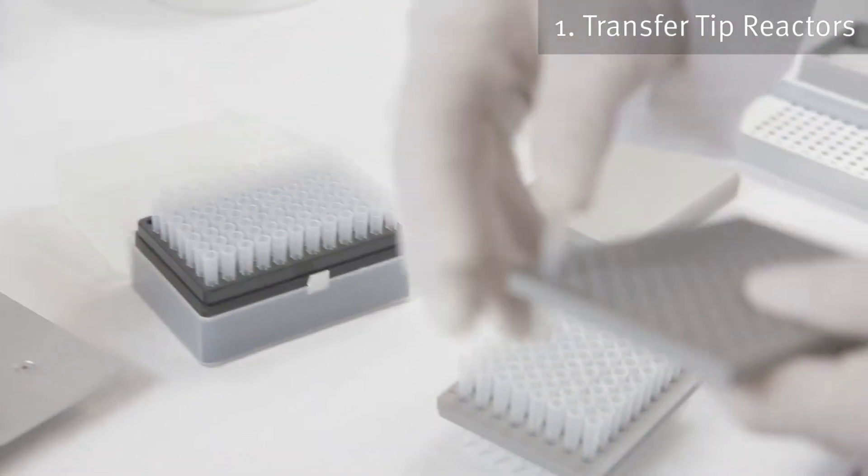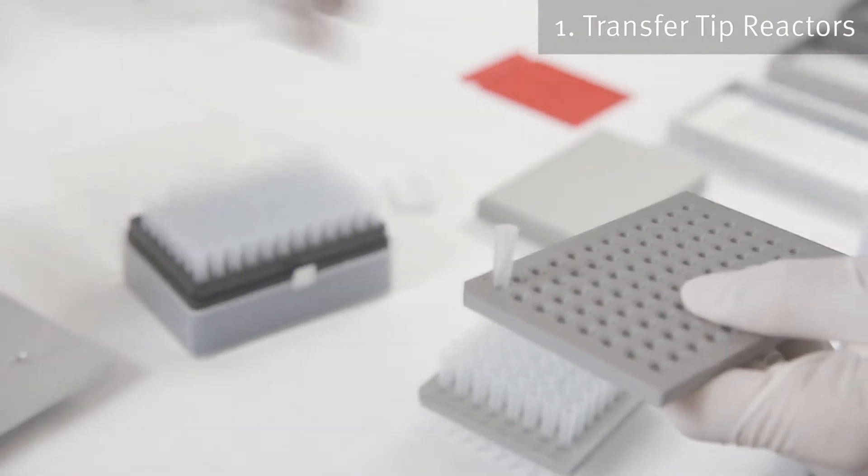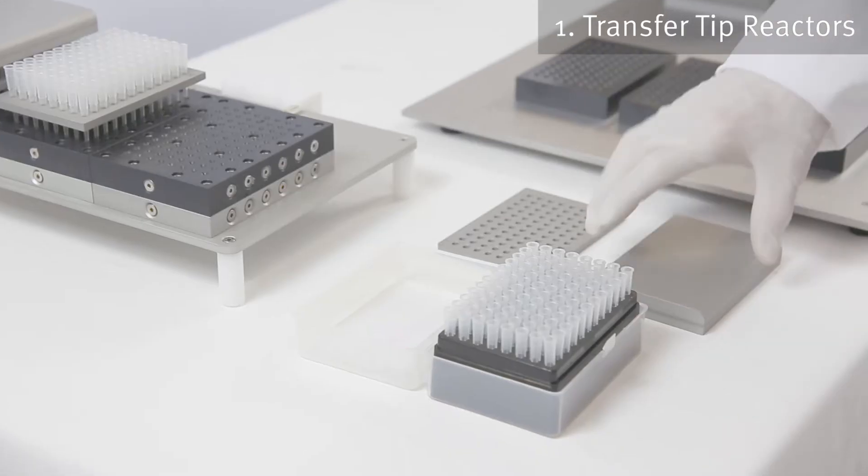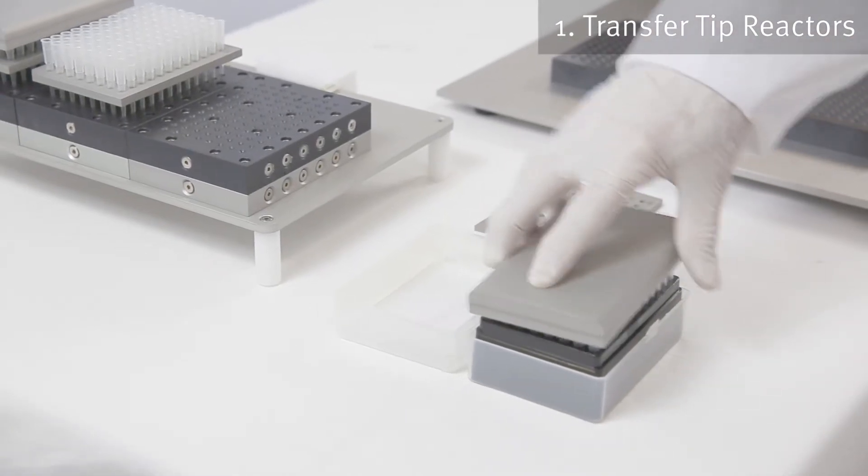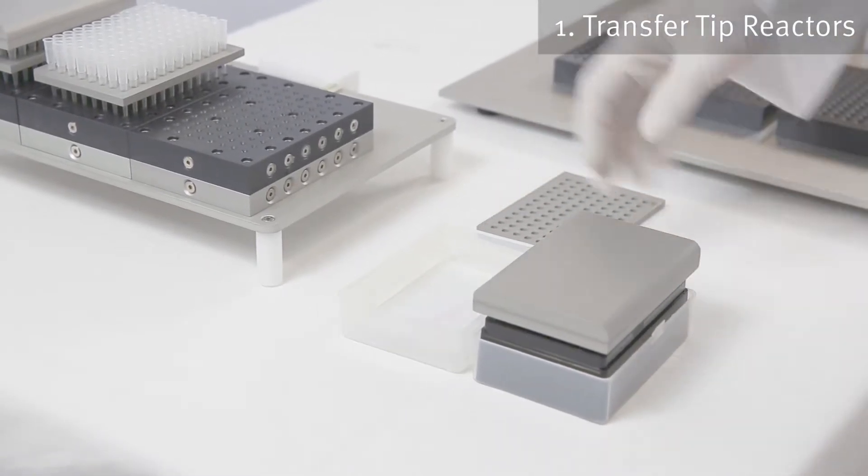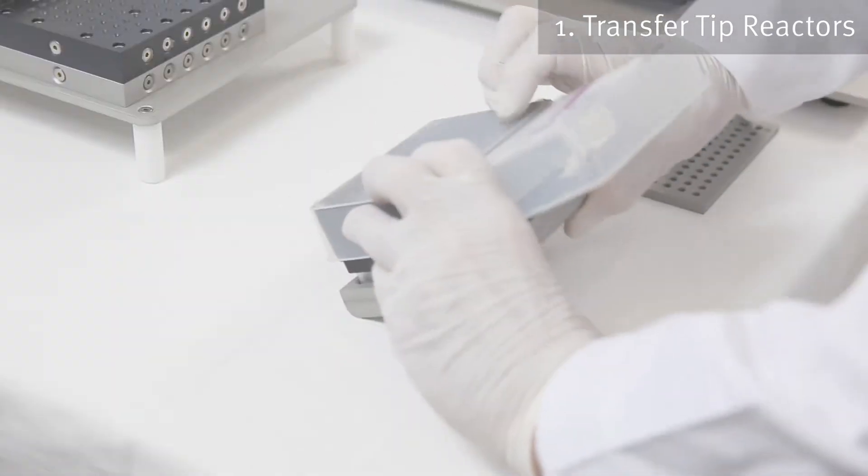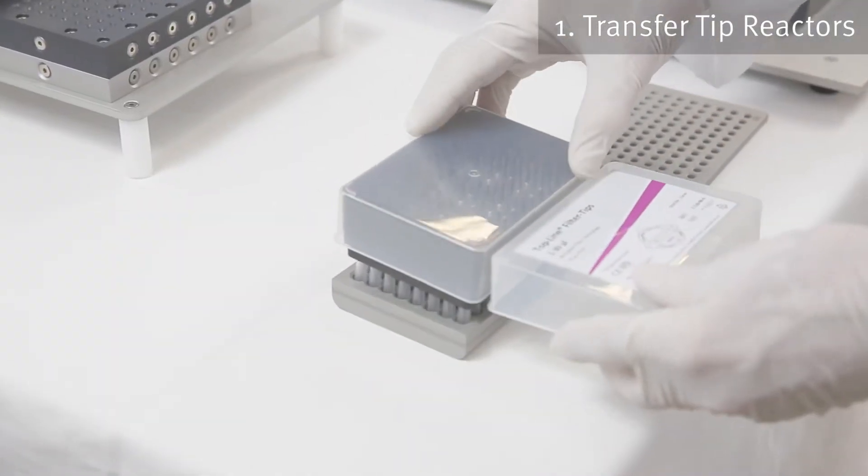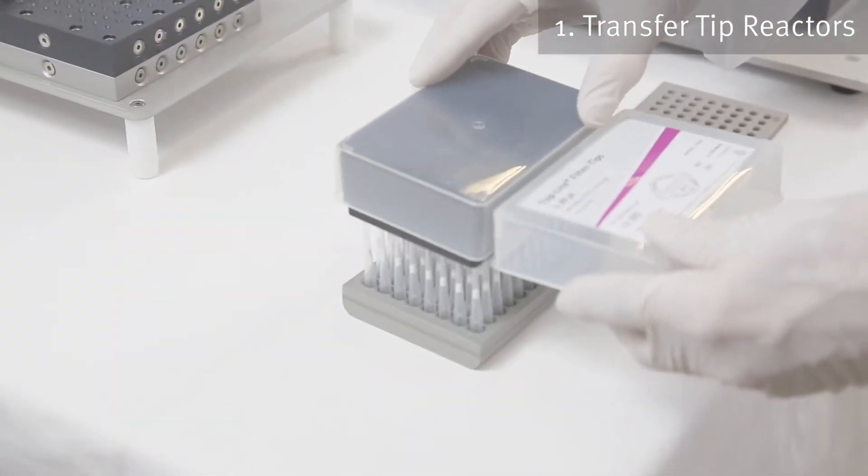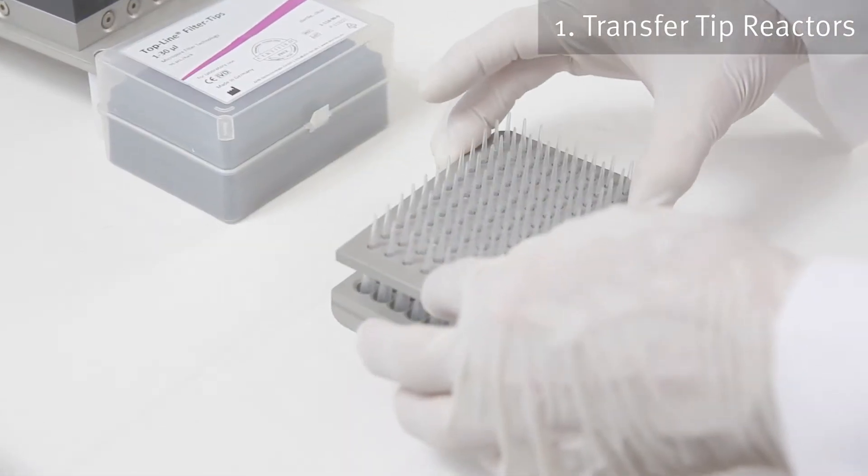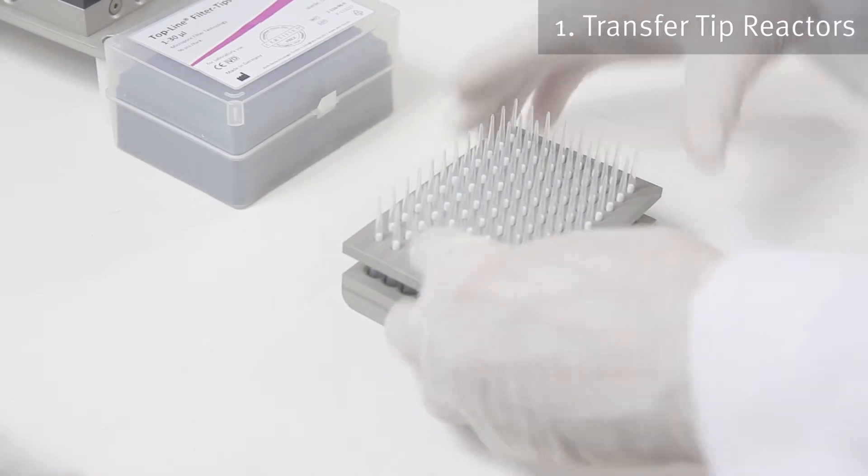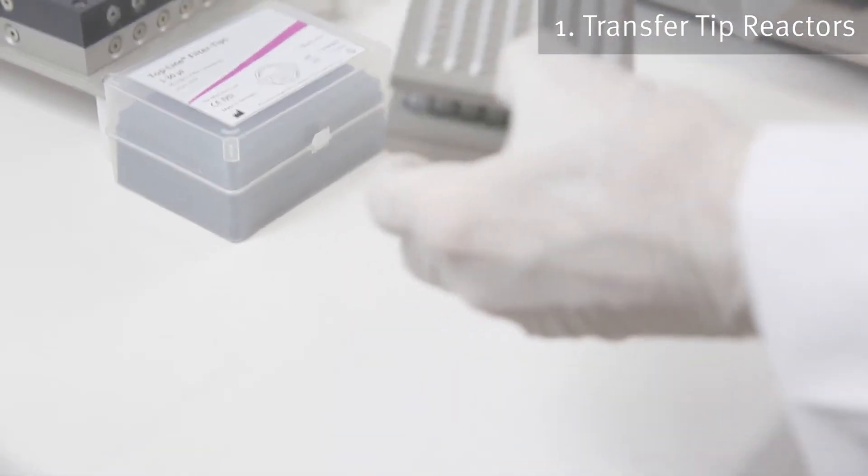The first step is to transfer the 96 tip reactors to the reactor holder plate. This can easily be achieved by placing the reactor cover plate over the box of 96 tip reactors and then turning upside down. Carefully remove the empty box, taking care not to knock over any tip reactors. Now place the reactor holder plate over the tip reactors and press firmly, then turn upright again. You're now ready to start.